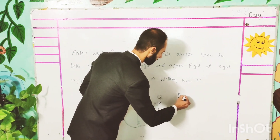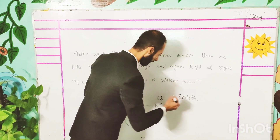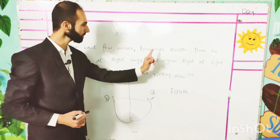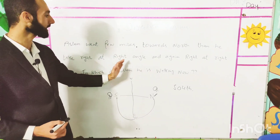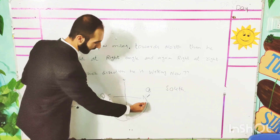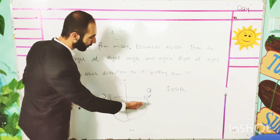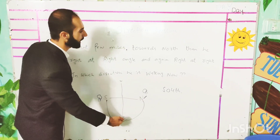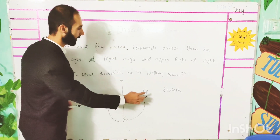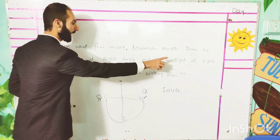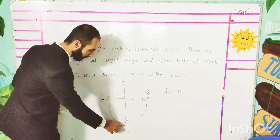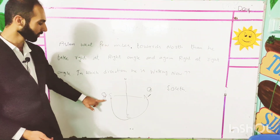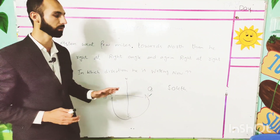In which direction is he walking now? We know that Aslam is now walking south. So what is the answer? South. How did we know that? Aslam went few miles towards north. Then he took right at right angle — that is east, because right from north is east. And again, right at right angle — that is south. So the answer to the first question is south.